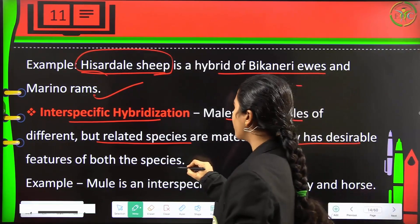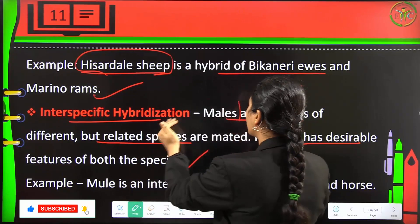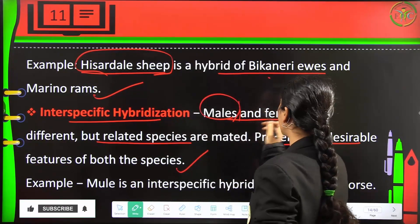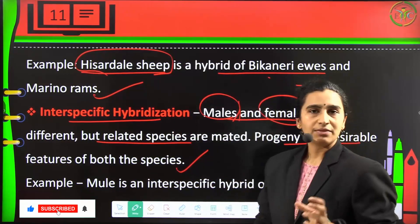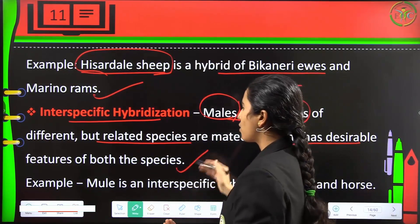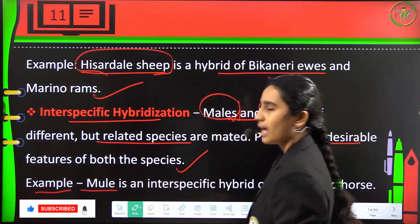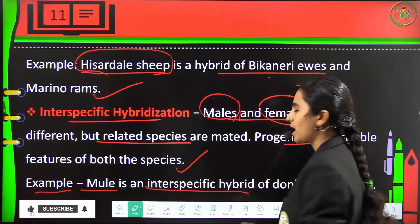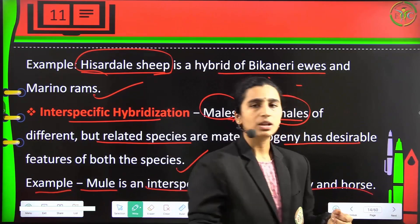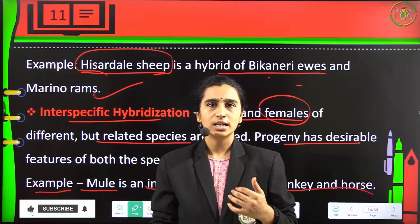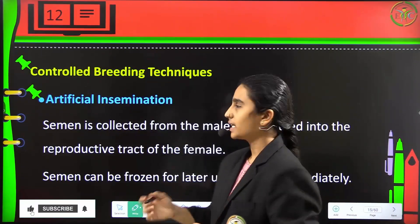The progeny from interspecific hybridization will have desirable features of both the species. A classic example is the mule, which is the interspecific hybrid of a horse and a donkey. The mule is a sterile animal and does not have any fertility.